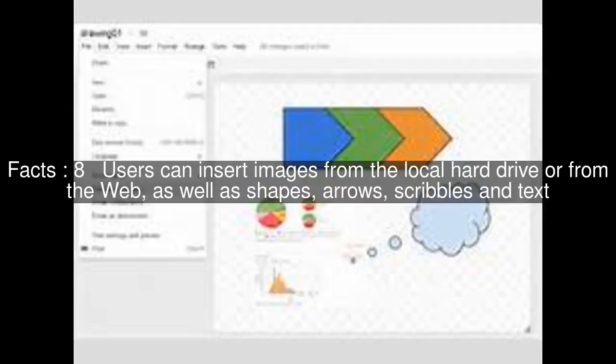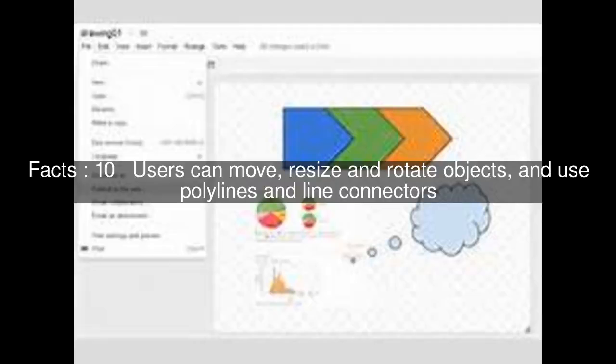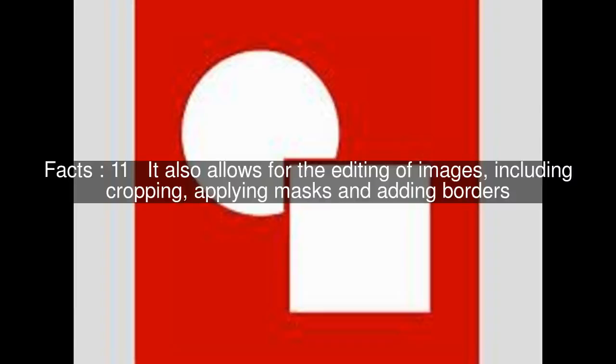Users can insert images from the local hard drive or from the web, as well as shapes, arrows, scribbles, and text. Google Drawings has a set of flowchart symbols and other shapes that can be dragged and dropped into place. Users can move, resize, and rotate objects, and use polylines and line connectors. It also allows for the editing of images, including cropping, applying masks, and adding borders.